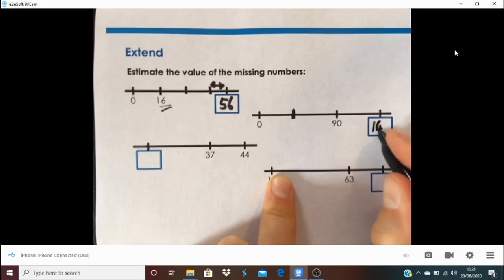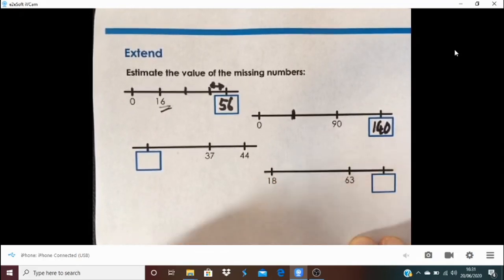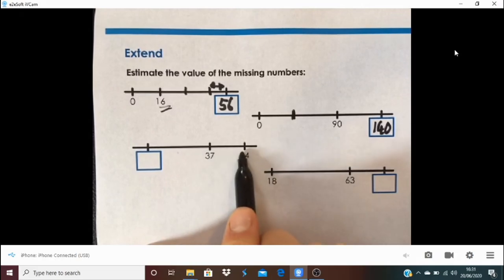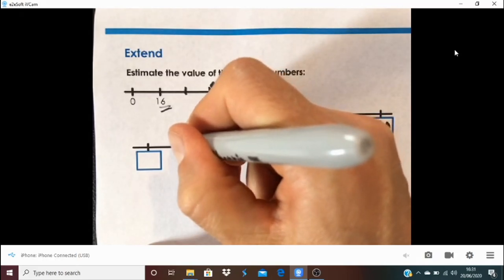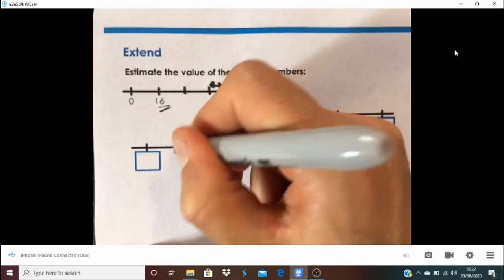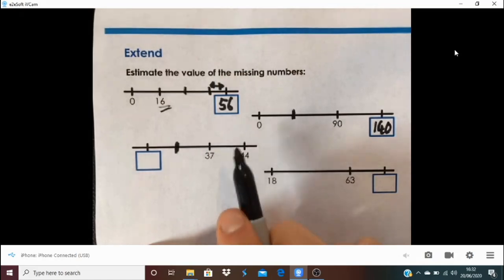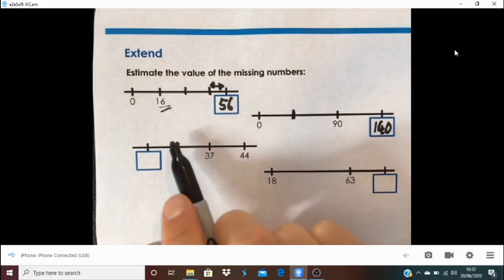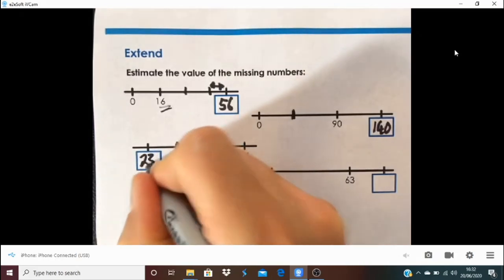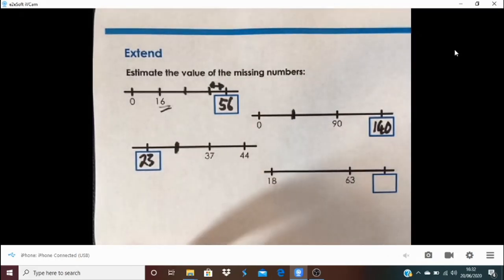I don't know if yours is similar slightly different. Here 37 to 44 so this is 7 so I thought it looks like here about two lots of the same gap backwards and so I went down from there by 14 and that got me to 23, that's how I estimated there.